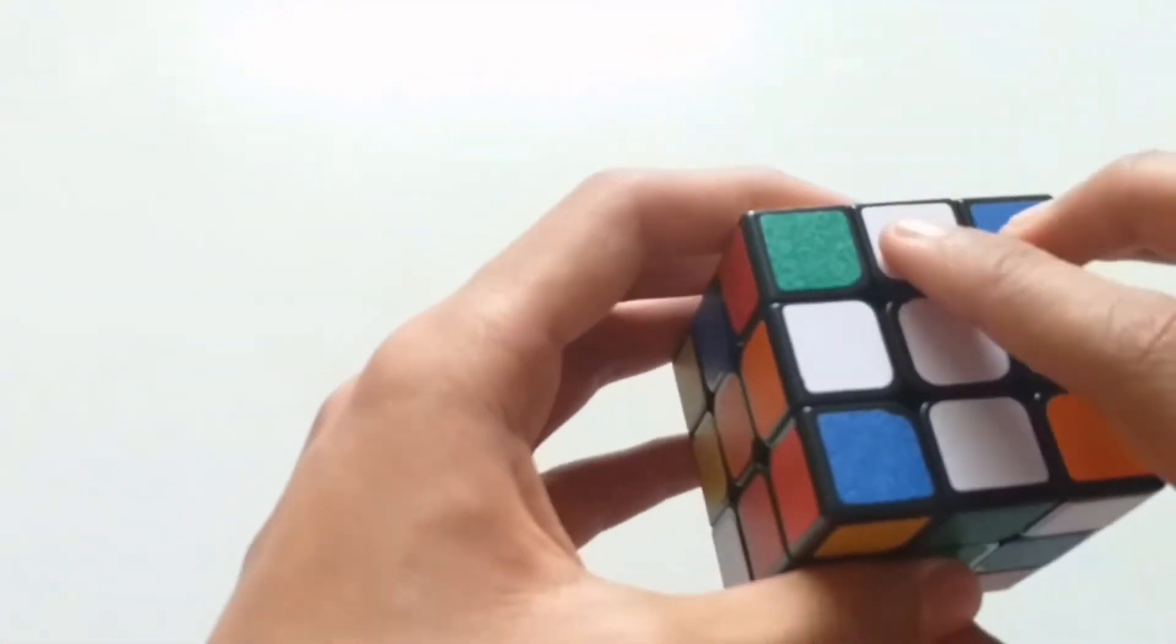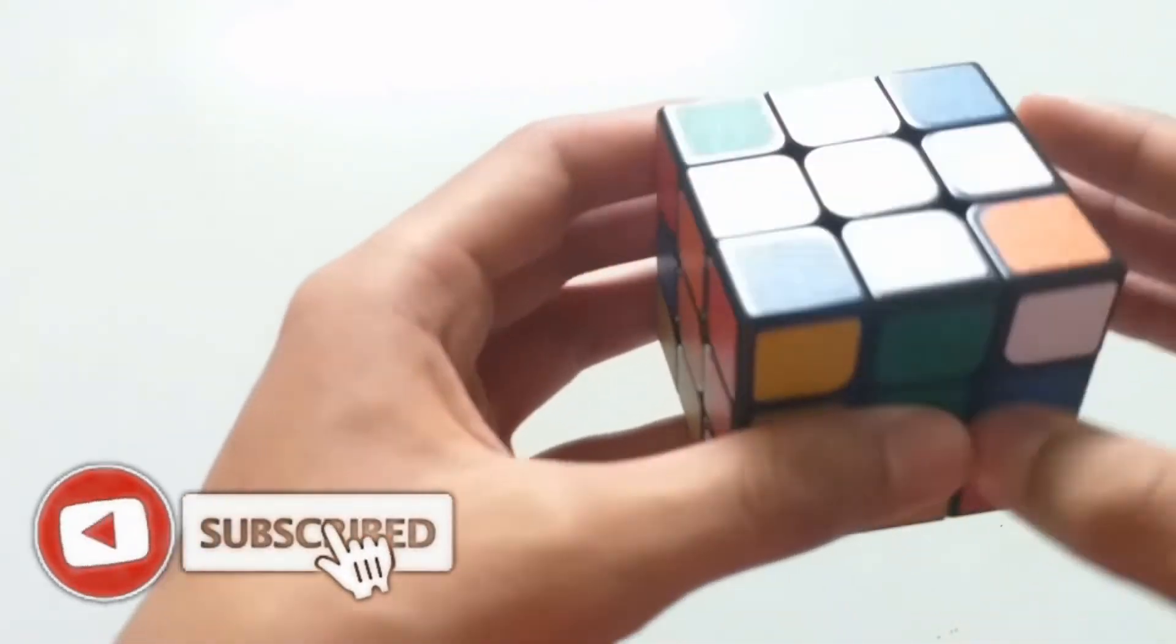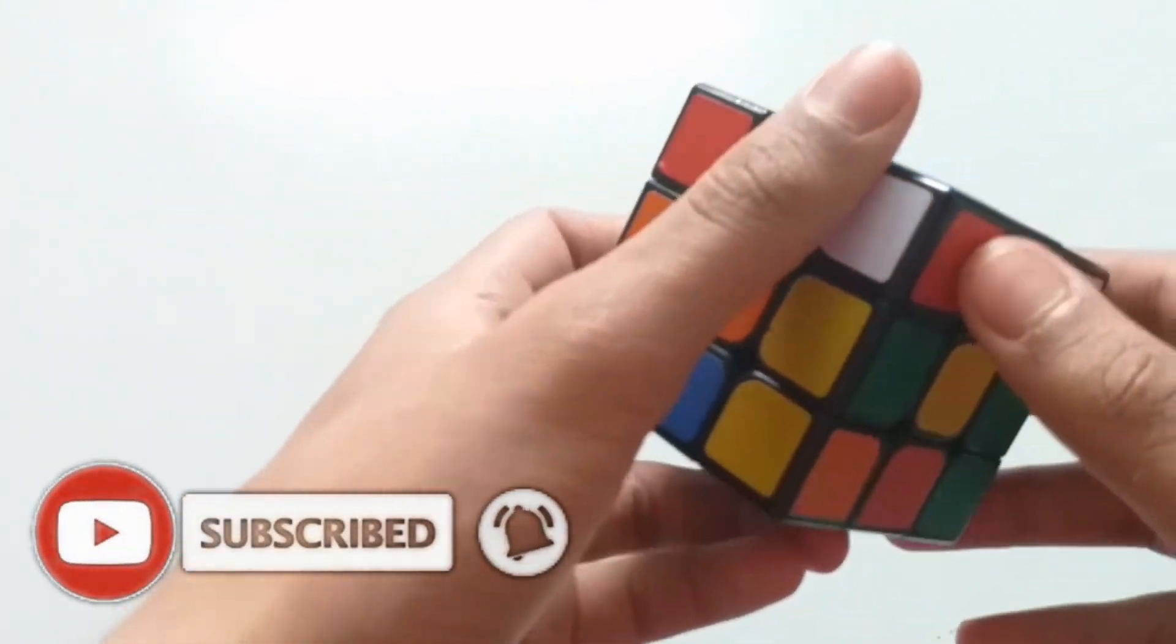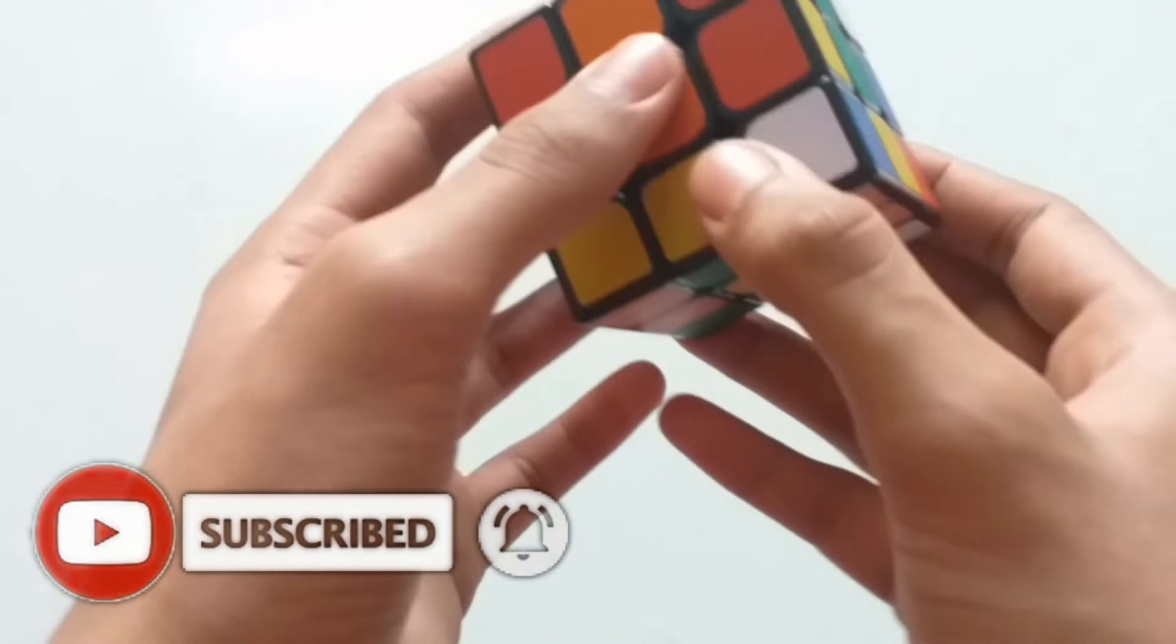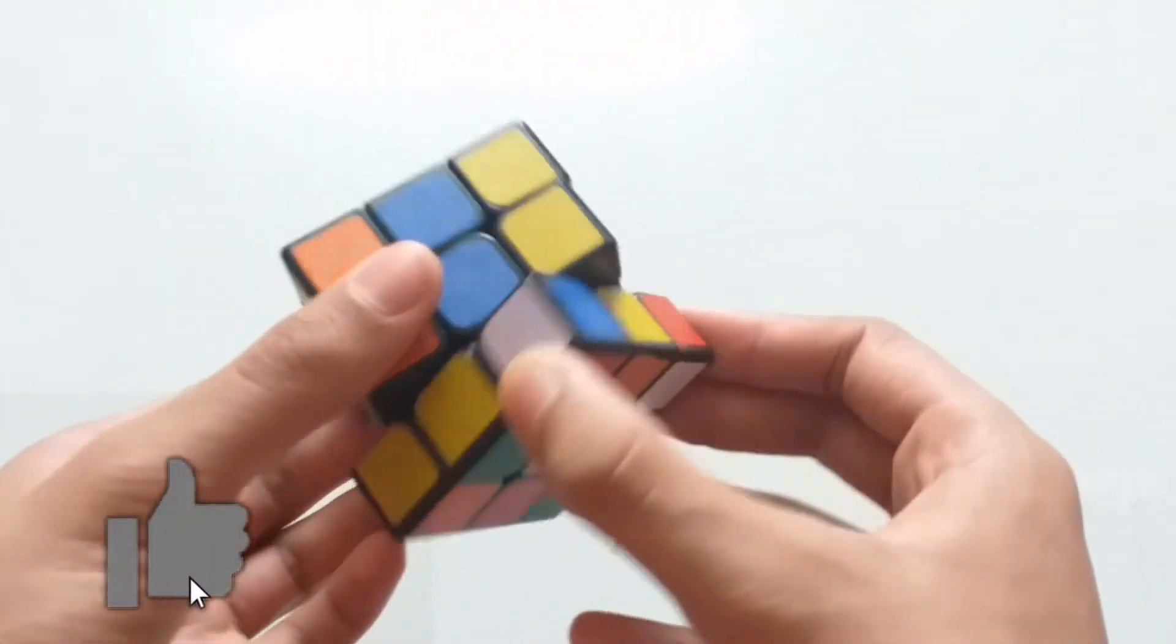You'll get a white cross. Now we have to fill the white corner pieces. Take the corner piece at the bottom and take it to its color.